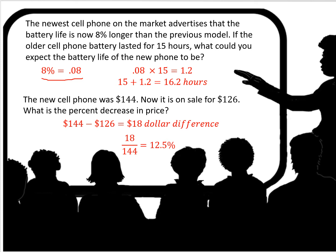This new cell phone was $144, and now it's on sale for $126. What's the percent decrease in price? First you take the original price, $144, and subtract the current price, $126. The difference is $18. So $18 is what percent of the original price, $144? You find that it is a 12.5% difference — that's the percent decrease.